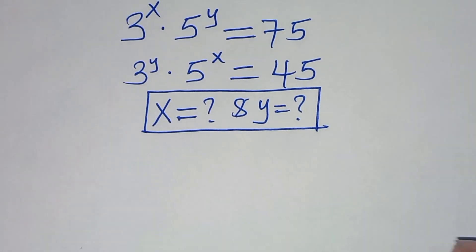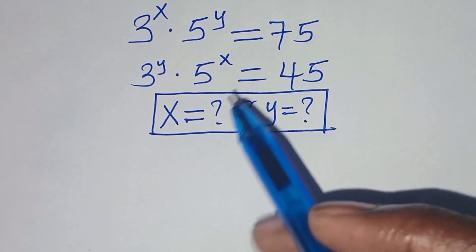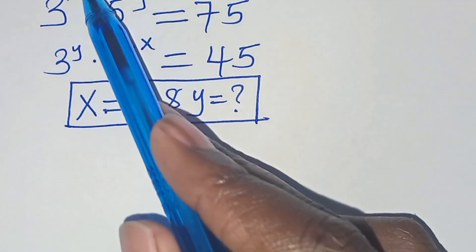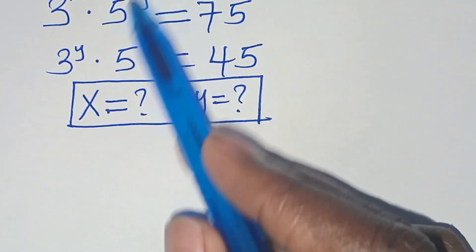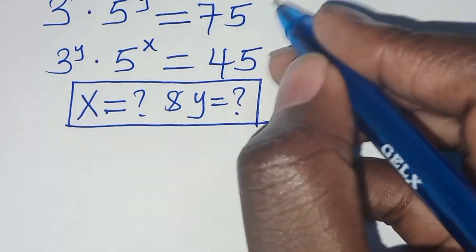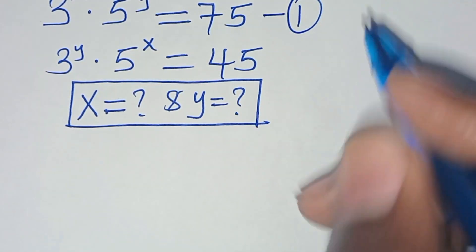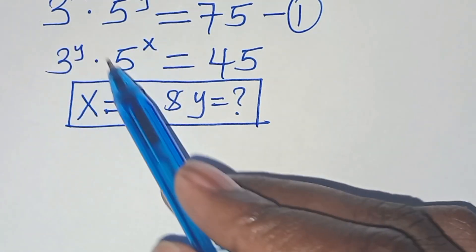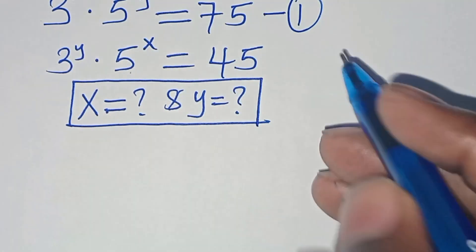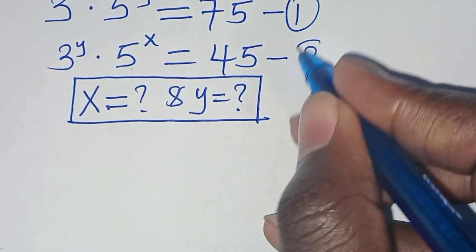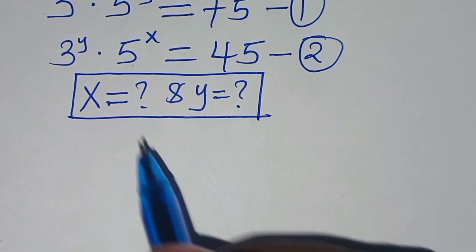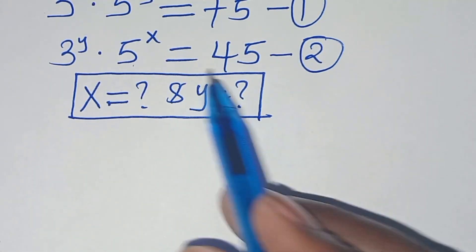Hello everyone, you are welcome to solve this nice algebra problem, which is 3 to the power of x times 5 to the power of y, this is equal to 75. Let's call this equation 1. 3 to the power of y times 5 to the power of x, this is equal to 45. Let's call this equation 2. So what is the value of x and what is the value of y?